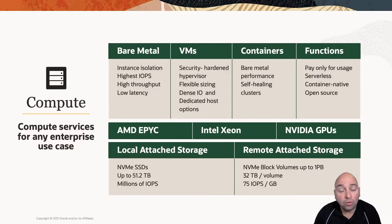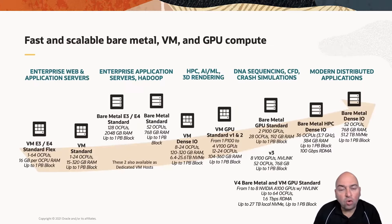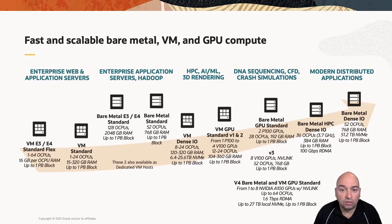We provide different processor architectures to run these workloads for you. We have both AMD and Intel processors, and you can even get them with GPU cards or local storage, depending on what kind of performance you require. And soon we'll also be offering ARM processors in our cloud for very processor-intensive applications. So with this very large menu of compute services, you can really run any kind of workload in the Oracle Cloud.